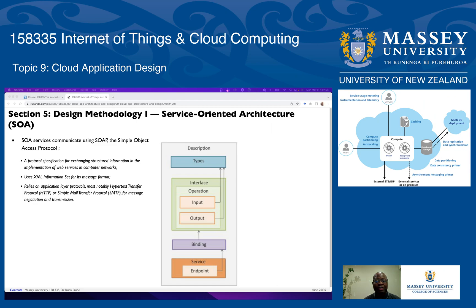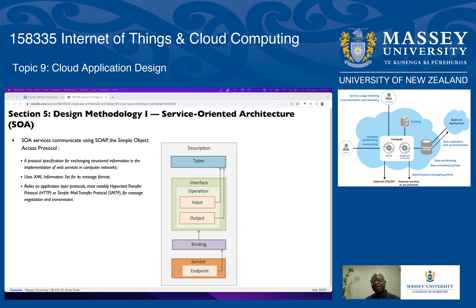SOA uses an XML information set for its message format. The structure of the message is shown in the diagram to the right. It relies on application layer protocols, especially HTTP and also SMTP, for message negotiation and transmission. Looking at the diagram, you have a description of the service, and the types of inputs and outputs under that description — in other words, you declare the types of the data, input, and output.